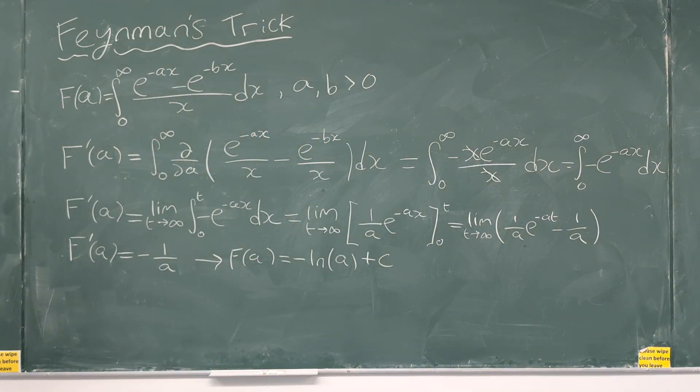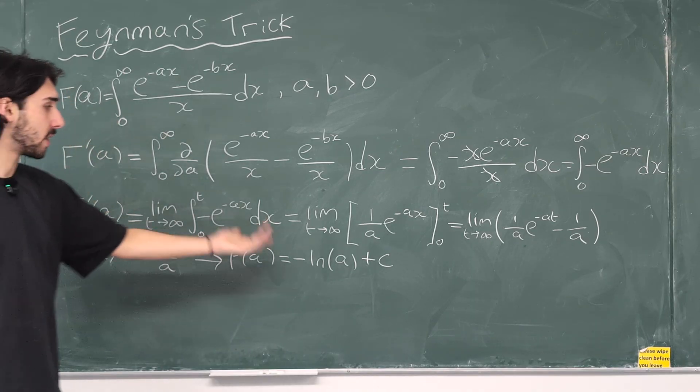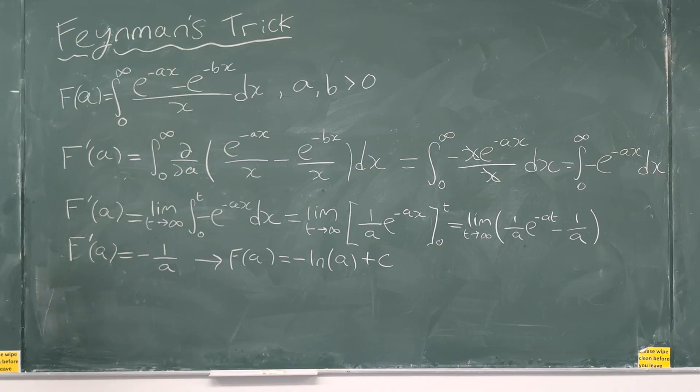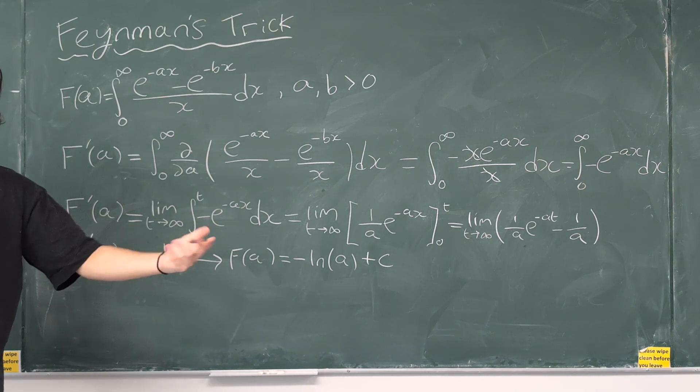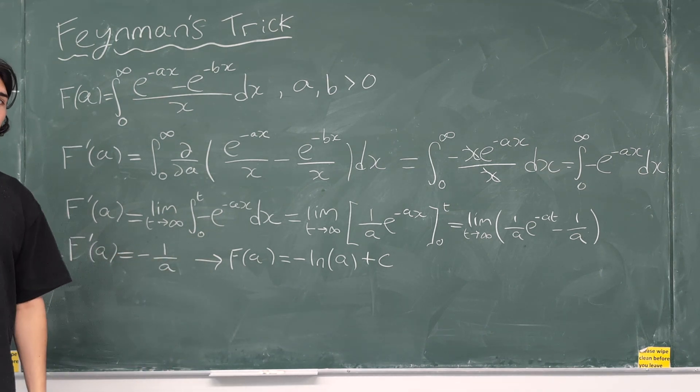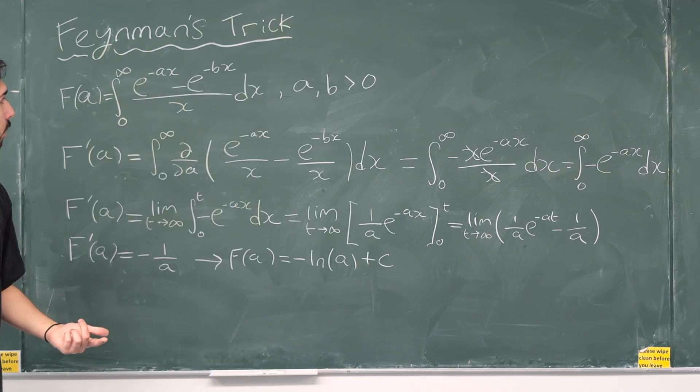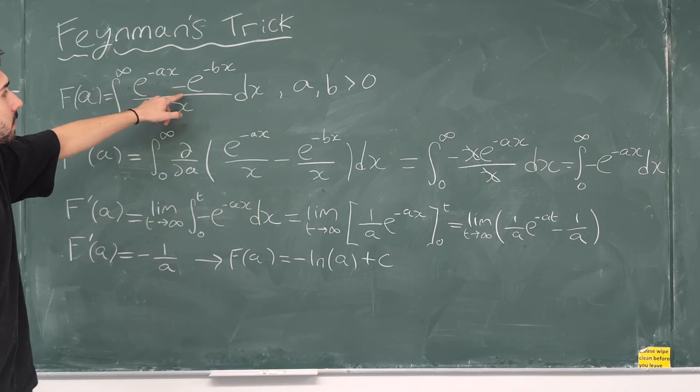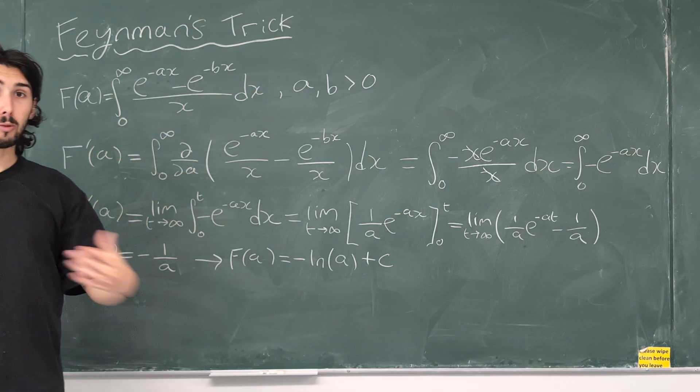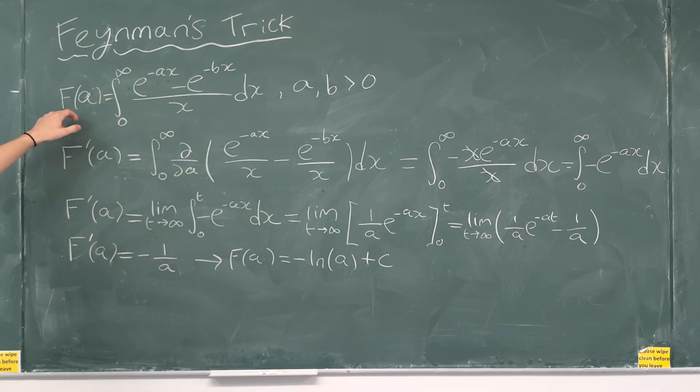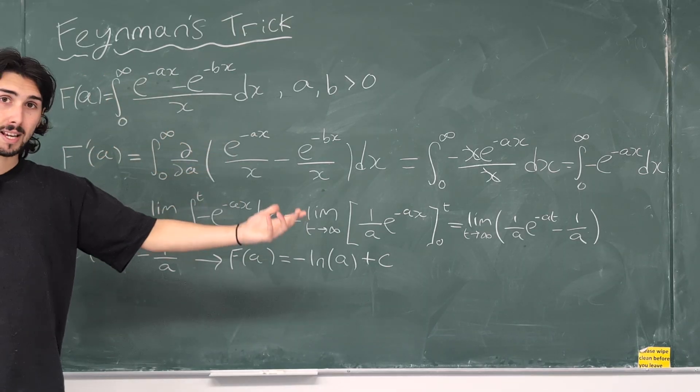Now, how would we find what c is? So, if we go back to the original integral, we need to find a way, an initial condition, we need to know the value of this integral when a is a particular number so that we can find c. Well, what could we do? What do we know? What could we choose? Well, it's not very obvious when a is like 1 or 2 or 3 or 4 or anything like that. A is a positive number, we can't choose a negative number. Do you see that if a was equal to b, then we'd have e to the minus bx minus e to the minus bx over x. That's 0. Just like in the last video, we made the integral be 0.